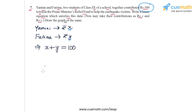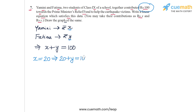Now we need to draw the graph of this equation, and for that we need to find any two specific solutions. Let's say X is equal to 20, which means Yamini contributed rupees 20. Substituting into the equation gives 20 plus Y equals 100, so Y equals 80. If Yamini contributed rupees 20, then Fatima contributed rupees 80.